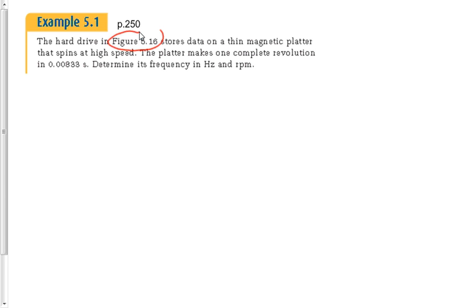RPM stands for rotations per minute or revolutions per minute. This is pretty accurate — a hard drive can actually spin around once in about 0.00833 seconds, very, very quickly. Some hard drives spin faster; the faster it spins, the quicker your access to data, but also the more you pay. Let's determine what the frequency is.